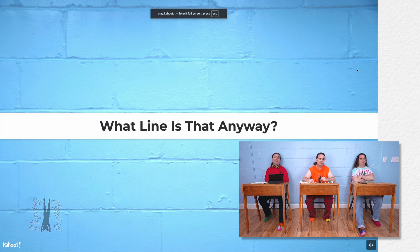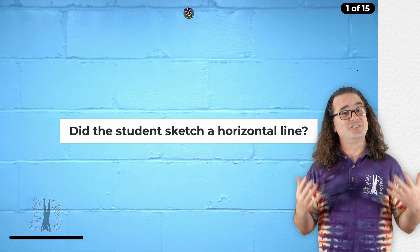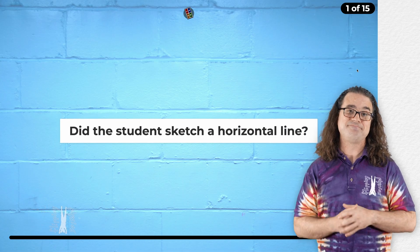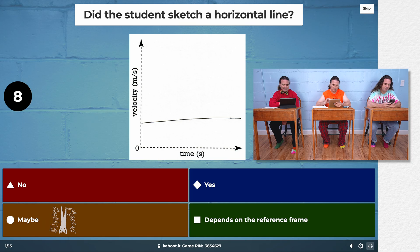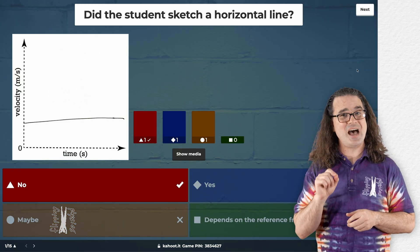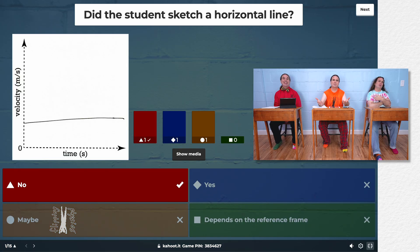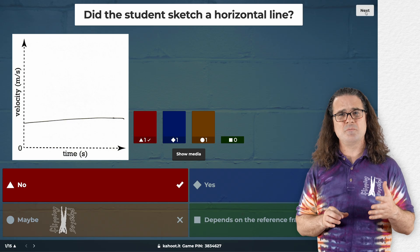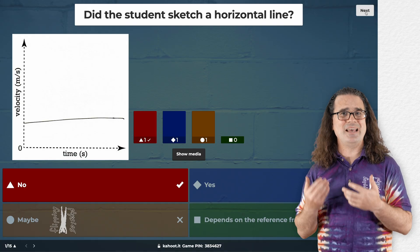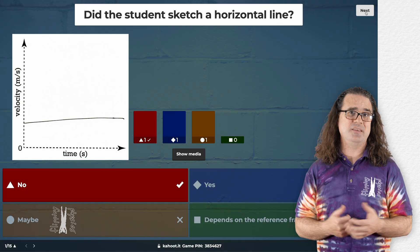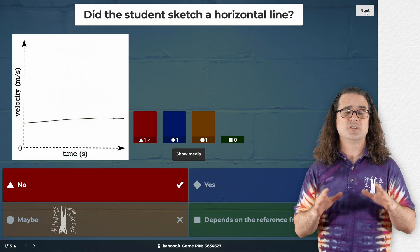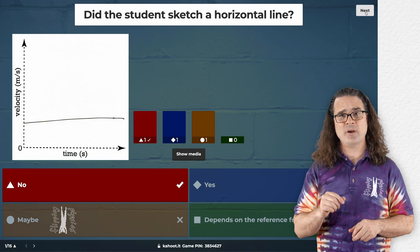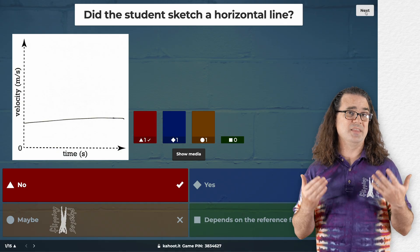And here we go. The first question is, did the student sketch a horizontal line? This is not a horizontal line. It looks horizontal to me. Right. It could be. Yeah. Now, while I agree that the student might have tried to draw a horizontal line here, as a reader, I cannot make the assumption that that is what they were trying to do.